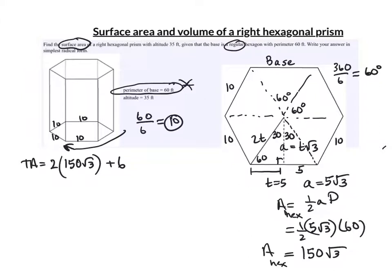So each of those rectangles has a base of 10 and a height going up. That's the altitude. This is 35 right here, all the way up and down. The altitude of the prism is the height of a prism. So there are 6 rectangles.